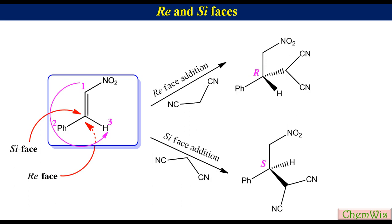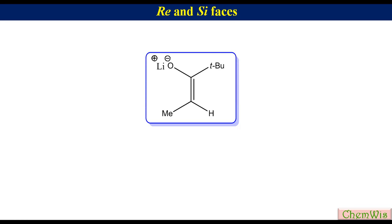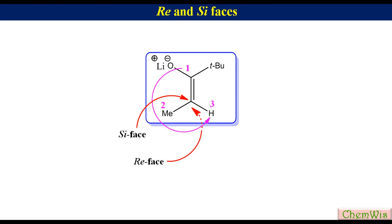In the case of enolates, for example the enolate of ethyl tert-butyl ketone, the electrophile attacks the alpha carbon. Labeling the three groups as 1, 2, and 3, the direction of the arrow drawn from 1 to 2 to 3 is anti-clockwise, so the top face is the Si face while the bottom face is the Re face. Similarly, we can assign Re and Si faces to prochiral enamines.